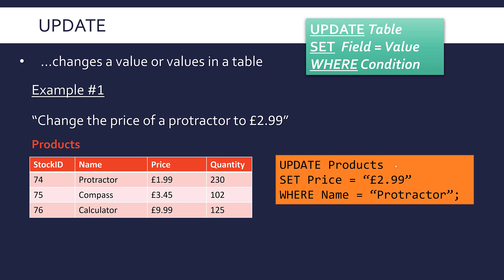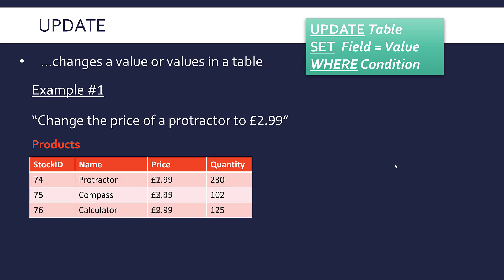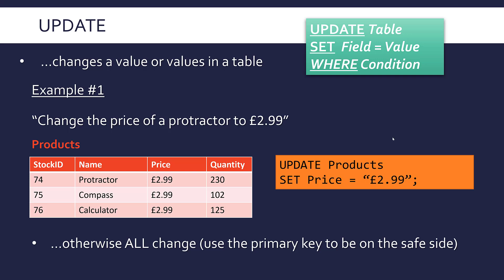That's a very subtle change — you blink and you miss it — but it changes the price from £1.99 to £2.99 in just the protractor record. A common mistake is forgetting to specify a WHERE clause. If you left off WHERE, you'd get a dodgy result: you would change every price in the table to £2.99, because it doesn't know which records specifically you want to change.